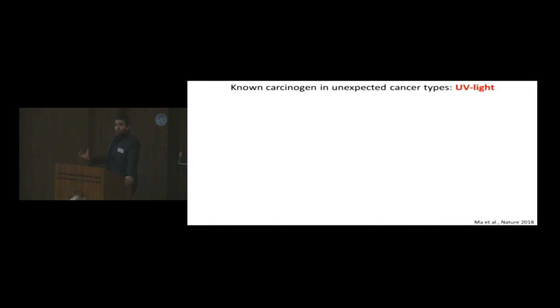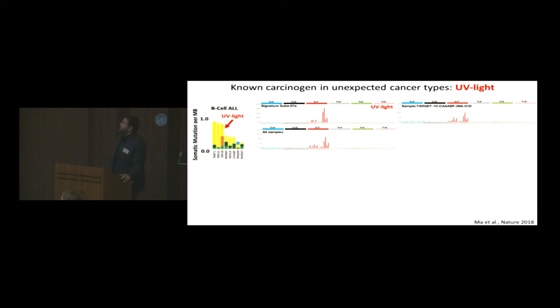My last story is from a Nature paper in 2018, in collaboration with the St. Jude team, looking into UV light. When we were looking into UV light, one would think about skin cancers. And all of a sudden, in their B cell ALLs, we started seeing the signatures of ultraviolet light. This is the way signature 7A looks. This is one of the signatures of UV light. This is the way their samples, all the samples that they had, or individual samples, looked like. So very similar pattern.